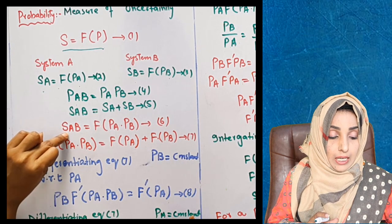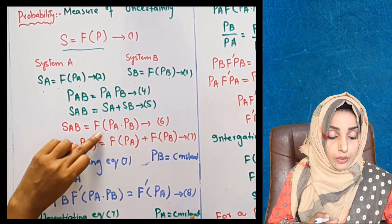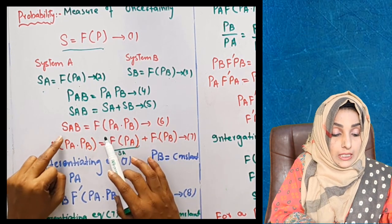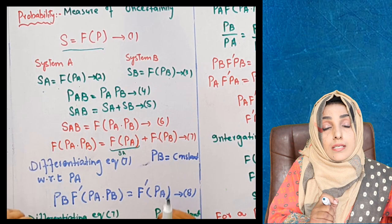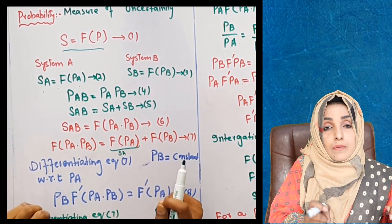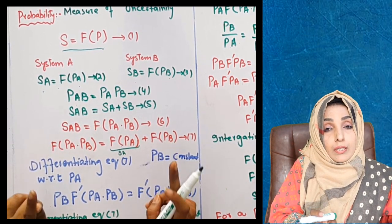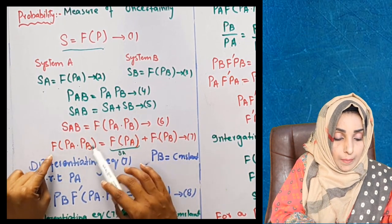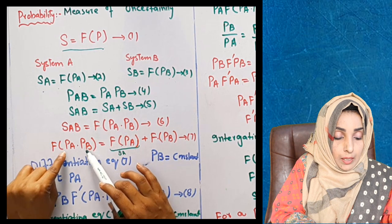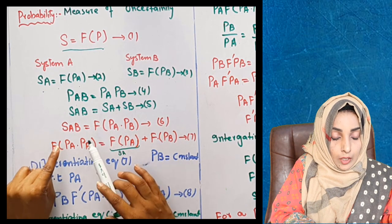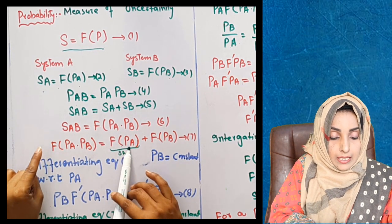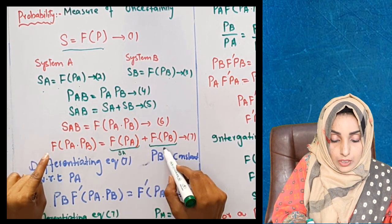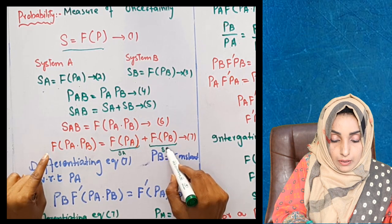We can write S(A+B) is equal to the function of probability of A and probability of B. So the sum of the entropies of the system is equal to the product of the probability of that system. The probability factor is multiplicative and entropy factor is additive. This is the entropy of system A and this is the entropy of system B.